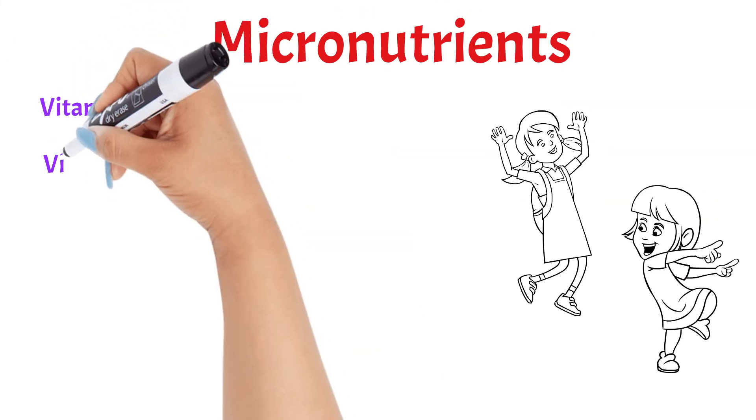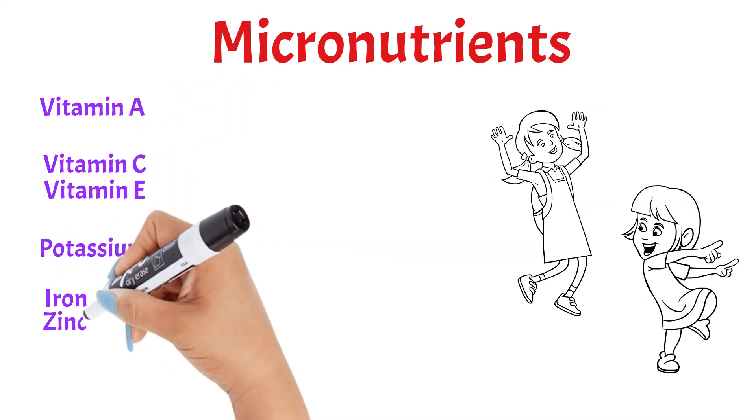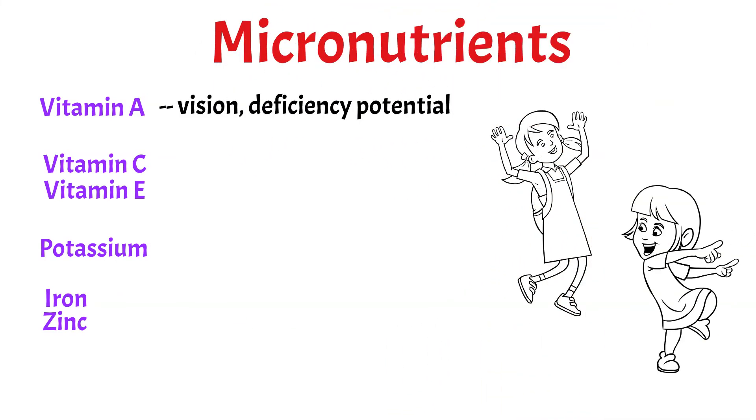Vitamins A, C, E, potassium, iron, and zinc are needed for growth and development. Vitamin A is also essential for vision, and a vitamin A deficiency is the leading preventable cause of blindness in developing nations.